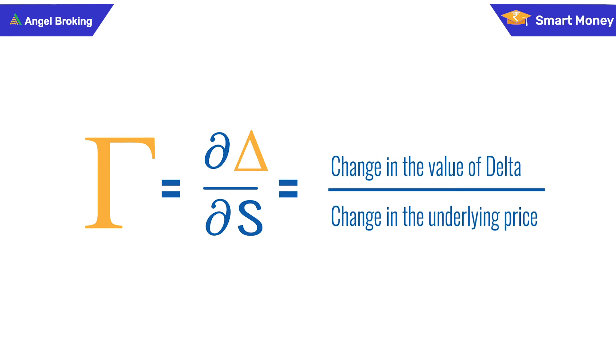Gamma is the rate of change in delta for every one point move in the price of the underlying.